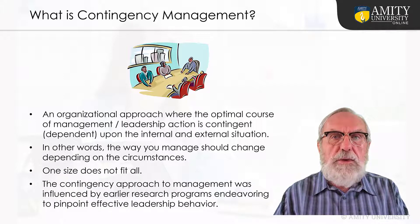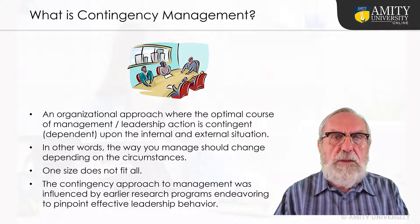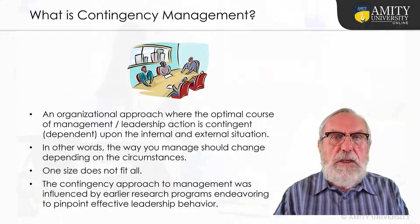The contingency management approach was influenced by earlier research programs endeavoring to pinpoint effective leadership behavior. During the 1950s, researchers at Ohio State, University of Chicago, and the University of Michigan administered extensive questionnaires measuring a range of possible leader behaviors in various organizational contexts. The research suggested that previous theories, such as Weber's bureaucracy and Taylor's scientific management, had failed because they neglected that management style and organizational structure are influenced by various aspects of the environment, also known as contingency factors.